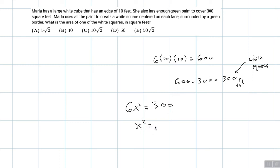So therefore, x squared is equal to 50. And this is asking us what's the area of one of the white squares. x squared is the area of one of the white squares. So the area of one of the white squares is 50 square feet. So the answer is choice D.